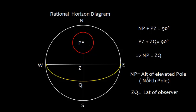What is NP? NP is altitude of elevated pole. And here, this elevated pole is North Pole. And ZQ is latitude of observer.